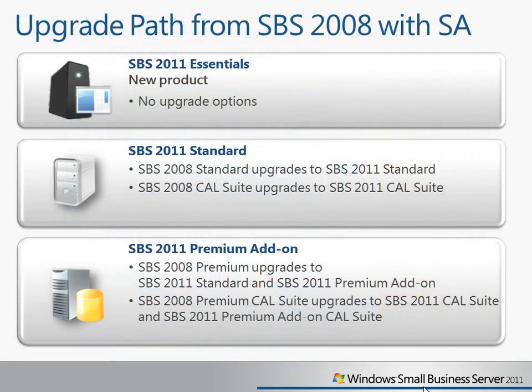This affects how we look at upgrades and downgrades. For customers with Software Assurance, the upgrade path from SBS 2008 depends on which of the 2011 products you're interested in. For SBS 2011 Essentials, this is a brand new product, so there are no upgrade options. For SBS 2011 Standard, there are upgrade options — if you have SBS 2008 Standard, that server license upgrades to SBS 2011 Standard. Similarly, the CAL Suite for SBS 2008 upgrades to the SBS 2011 CAL Suite.